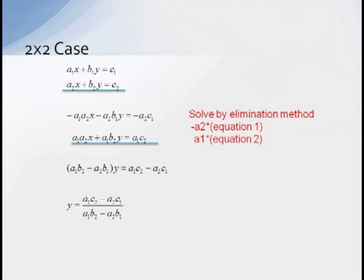To get Y by itself just divide both sides by A1B2 minus A2B1. And we see that Y is equal to A1C2 minus A2C1 divided by A1B2 minus A2B1.